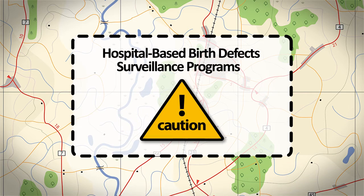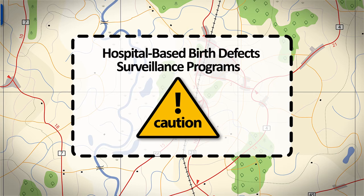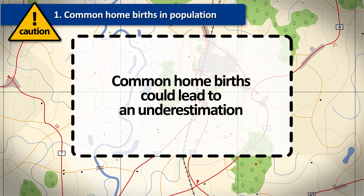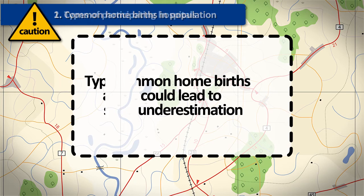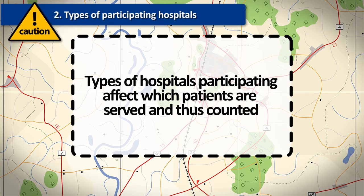Some cautions should be noted when using hospital-based data to calculate prevalence. First, if home births are common in a population and only hospital-based data are collected, there could be an underestimation of birth defects prevalence. Second, the types of hospitals participating in the surveillance program can affect which patients are served, and thus counted.